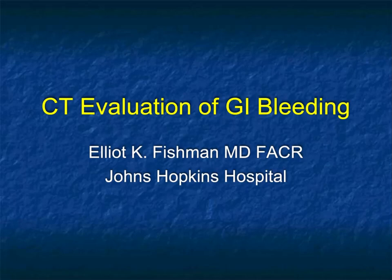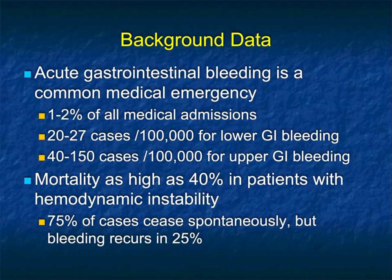Hi, this is Elliott Fishman and welcome to our latest series of talks. This one is going to be on the CT evaluation of GI bleeding. This is a very important application that we see on a daily basis at Hopkins and I'm sure in your hospital as well. Acute GI bleeding is a common medical emergency, accounting for up to 2% of all hospital admissions, with more upper GI bleeding than lower GI bleeding. Mortality can be as high as 40% in patients with hemodynamic instability.